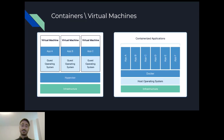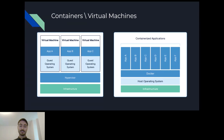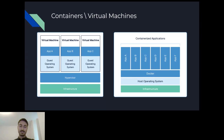Containers are much less secure than virtual machines. On the left side you can see a virtual machine infrastructure with a hypervisor managing all the machines — each machine has a separate operating system. And on the right, there is an infrastructure of a Docker machine hosting a few different applications. Each application is inside a separate container, but they are all running on the same host operating system with the same kernel.